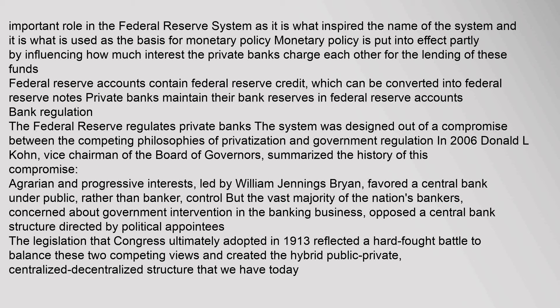The Federal Reserve regulates private banks. The system was designed out of a compromise between the competing philosophies of privatization and government regulation. In 2006, Donald L. Cohn, vice chairman of the Board of Governors, summarized the history of this compromise: agrarian and progressive interests favored a central bank under public control, but the vast majority of the nation's bankers opposed a central bank structure directed by political appointees. The legislation that Congress ultimately adopted in 1913 reflected a hard-fought battle to balance these two competing views, creating the hybrid public-private, centralized-decentralized structure that exists today.